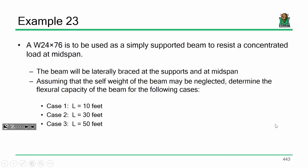I don't want this example to be a C sub B marathon as much as I want it to be about computing the capacity. So, by neglecting the self-weight, we're able to actually use a tabulated value for C sub B, and it makes our lives a little easier.